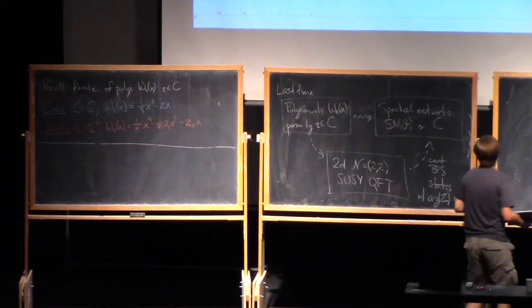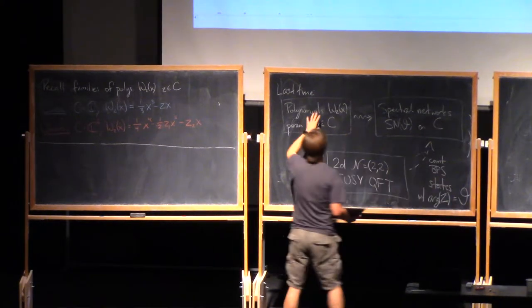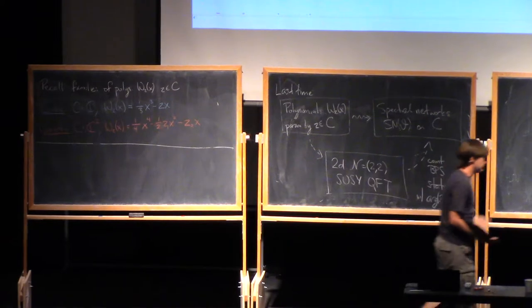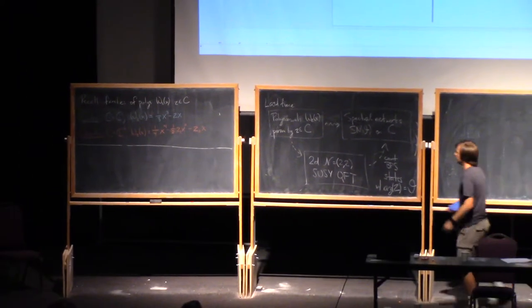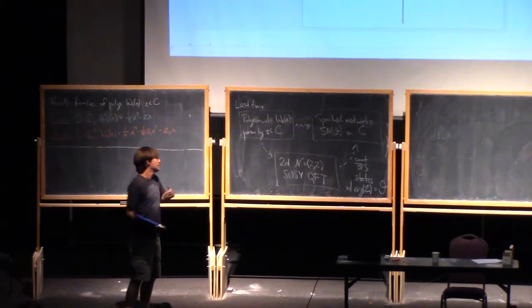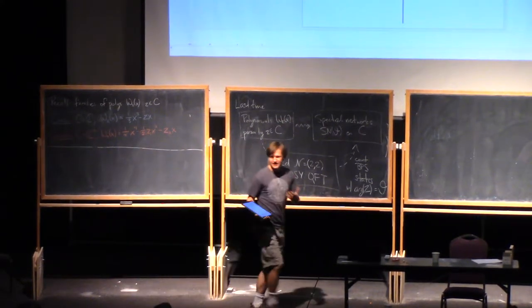But the way we were thinking of it was that, starting with the polynomials, you produce something way more elaborate, which is an N equals 2,2 supersymmetric quantum field theory. In that quantum field theory, there's this supernatural question to ask, which is, what are all the BPS states?